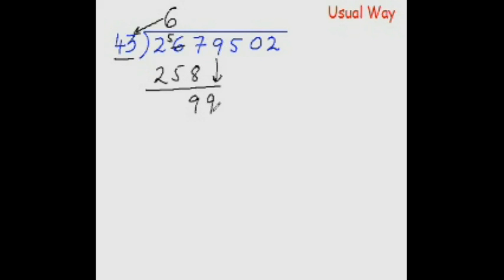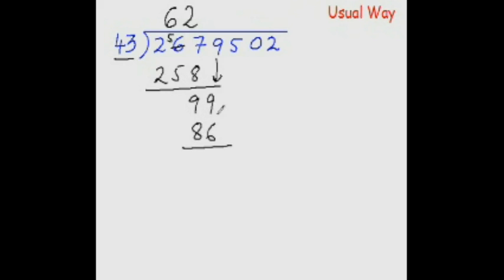Drop the next digit down to get 99. Now how many times does 43 go into 99? You can say 2 times, or hide the units digits and see that 4 goes into 9 twice. Write 2. Multiply: 2 times 3 is 6, 2 times 4 is 8. Subtract: 9 minus 6 is 3, 9 minus 8 is 1. Drop down the next digit, which is 5.